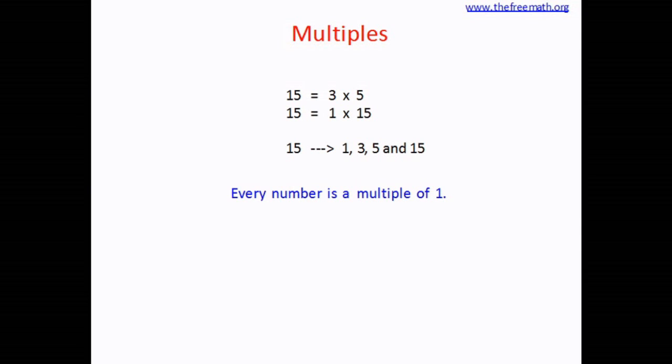Since every number comes in the table of 1, every number is going to be a multiple of 1. So that is the first rule we understood.